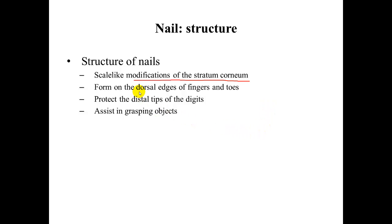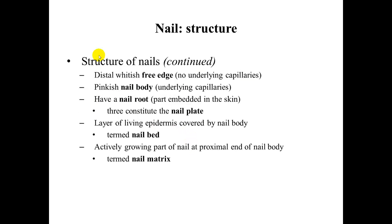We find nails on the dorsal edges of the fingers and toes. They are there for protection and to assist in grasping objects. Looking at the structure of nails, you will see each of these structures. We have the free edge, the nail body, and the nail root, which together constitute the nail plate.